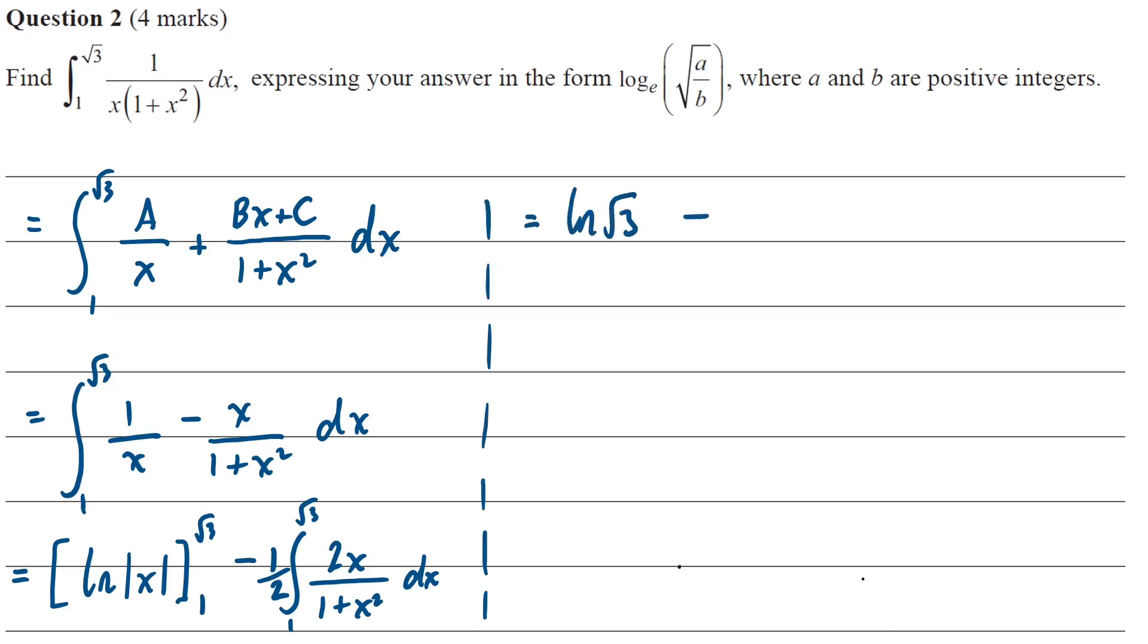All right, so for the log subbing in the root 3, log of 1 is 0. And for that second integral, it'll become a half log of 1 plus x squared. And again, we don't need the modulus because 1 plus x squared is always positive. Substituting in there, this is what we get.